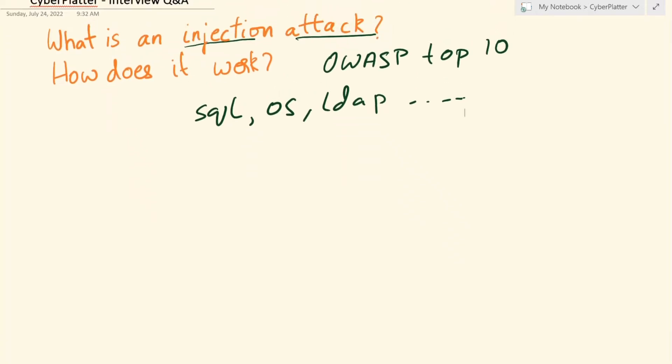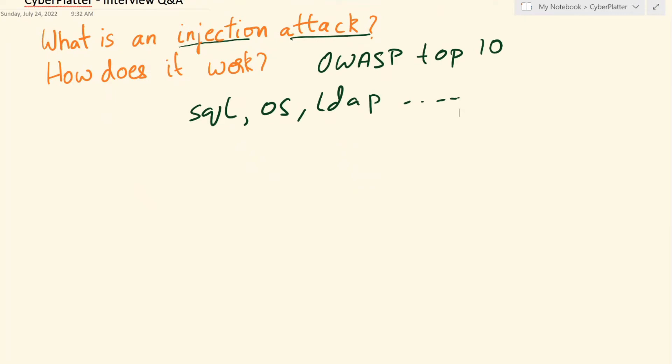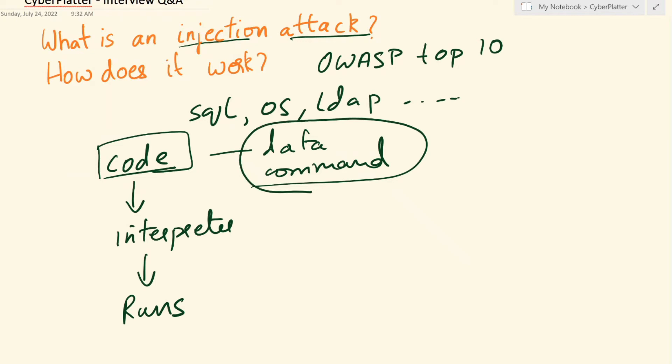So what happens in a web application or a program is that a developer writes a code, the code is sent to the interpreter and the interpreter interprets the code and executes it. This code here is used to describe both data and command. This is a very powerful concept, but this also enables what is called as an injection attack.